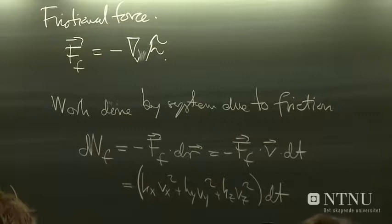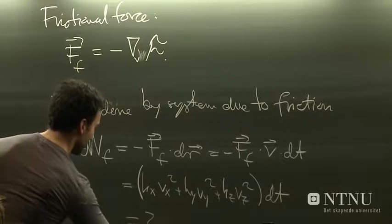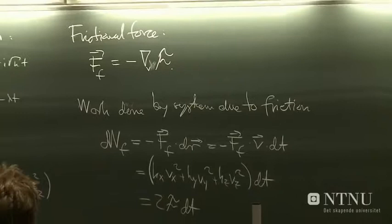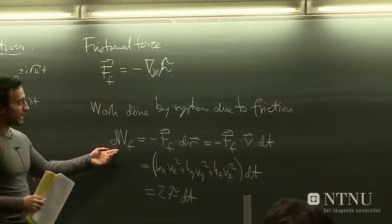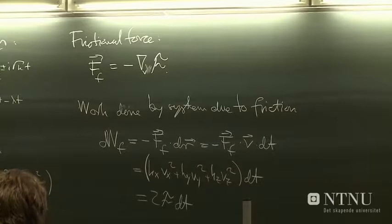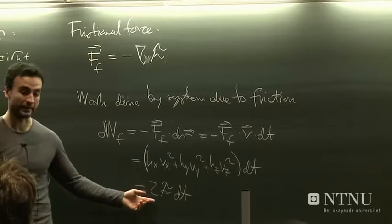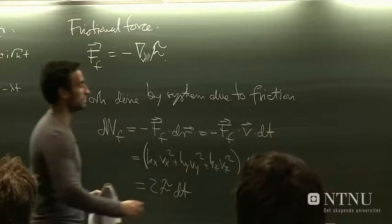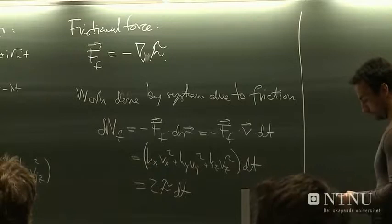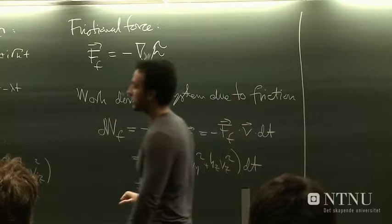So I just omitted the sum over i here. So we're just considering one particle for simplicity. And this is just two times the dissipation function and dT. So you can see that the rate, the rate of energy loss, the rate of work done by the system due to friction, is just two times this dissipation function. So it's a quite simple expression.